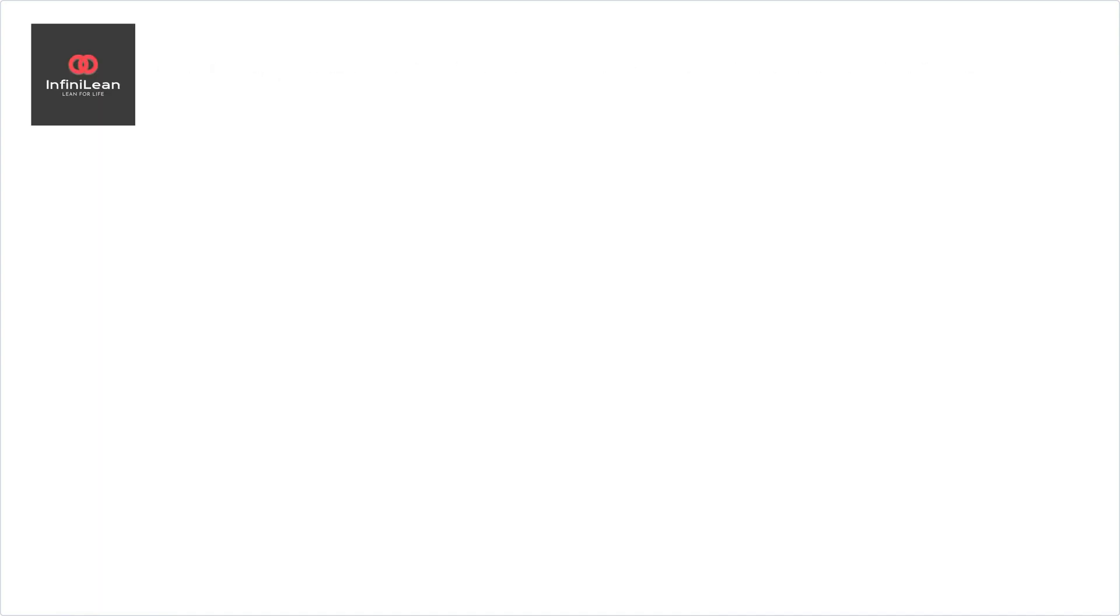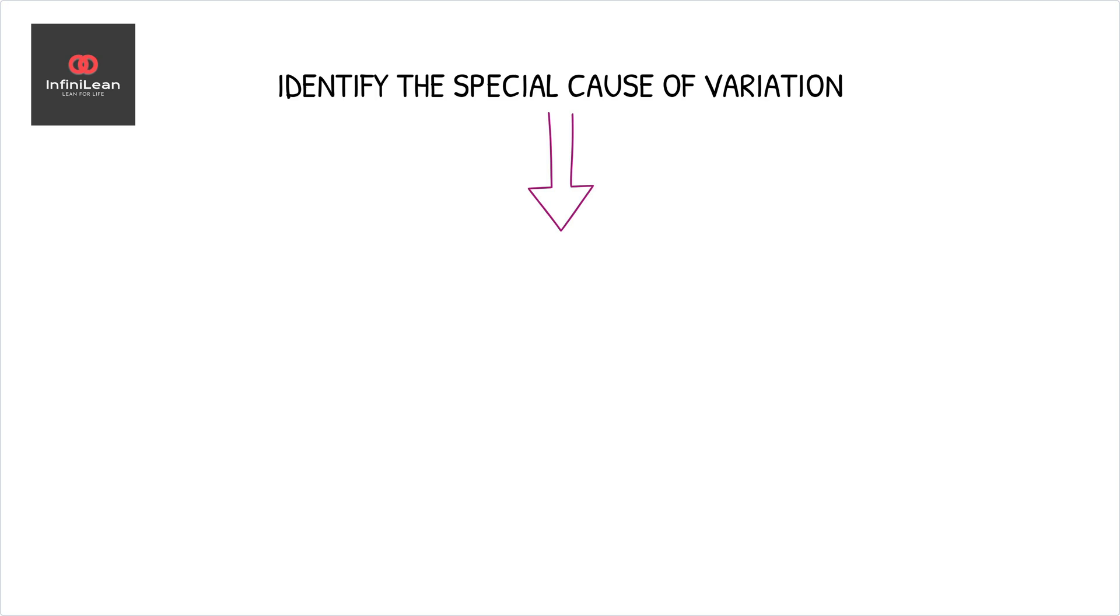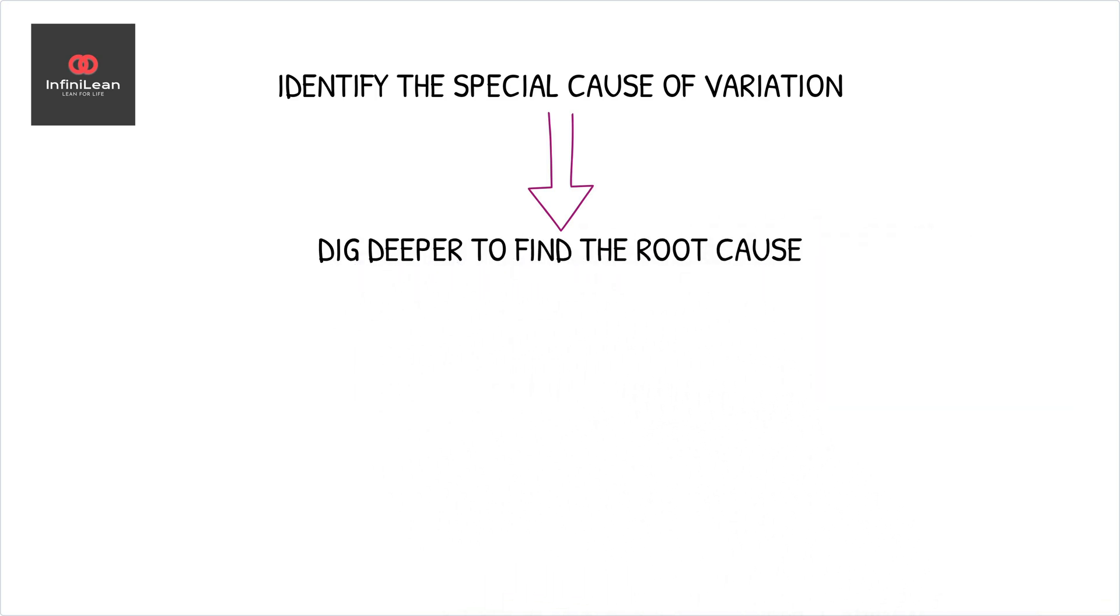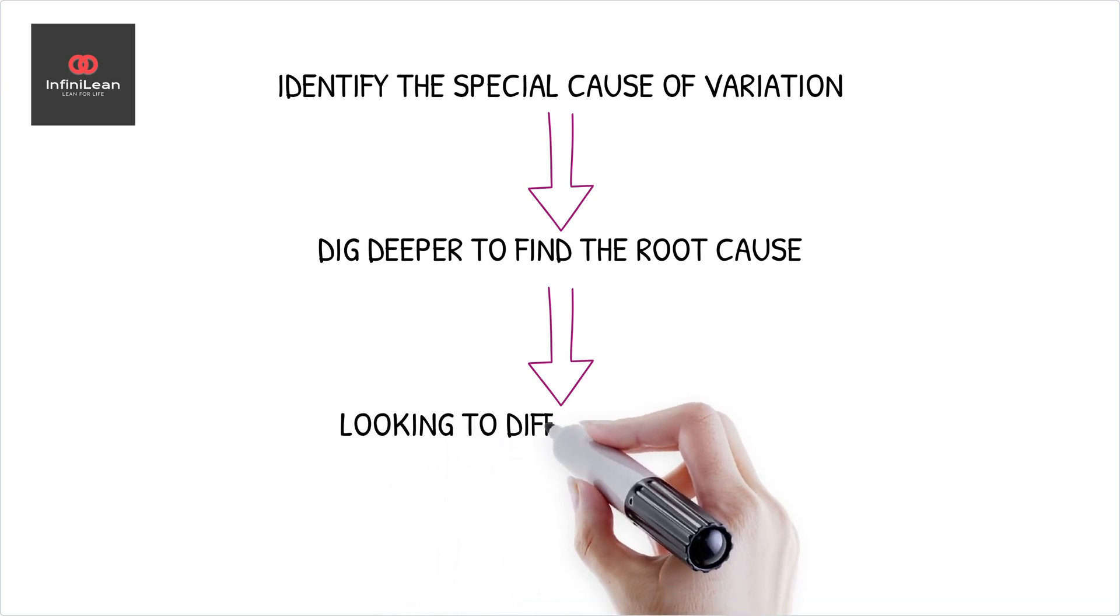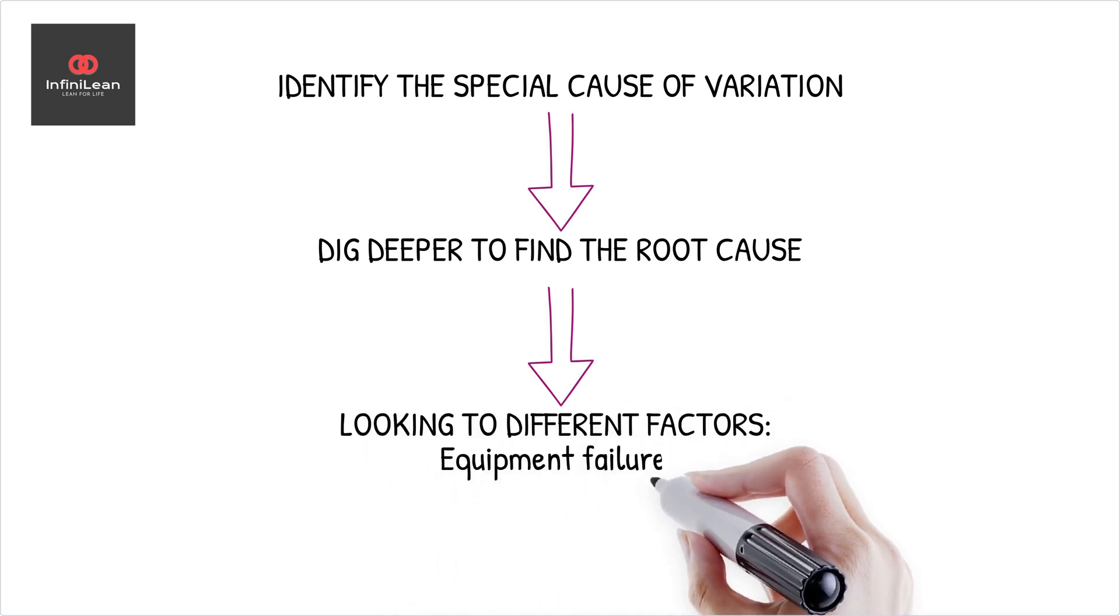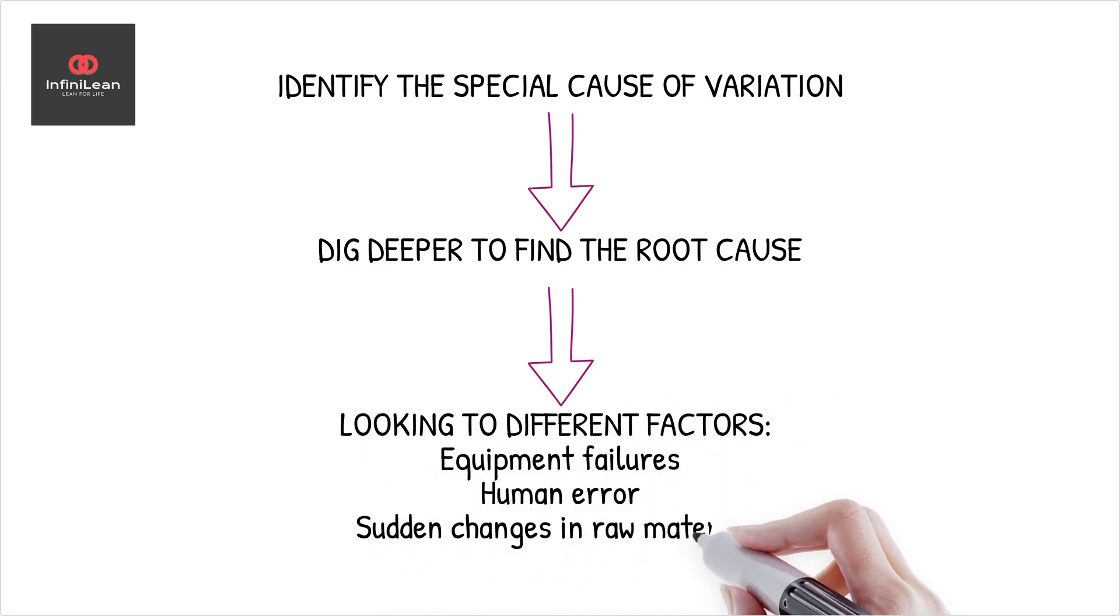Once identified, the challenge is to dig deeper to find the root cause. This can often be attributed to a range of factors: equipment failures, human error, or sudden changes in raw materials, to name a few. Addressing these issues resolves the immediate anomaly and prevents future occurrences, enhancing process capability.